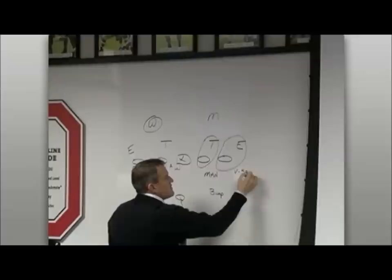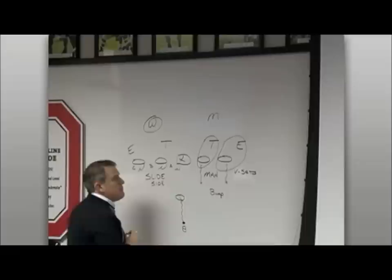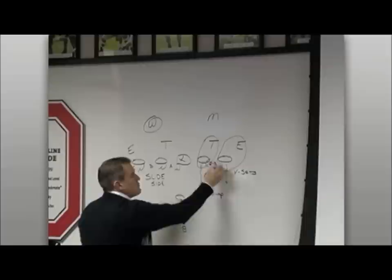So they are vertical, straight back, shoulder square, hip-to-hip, a two to three foot split in here, depending on pre-snap alignment.